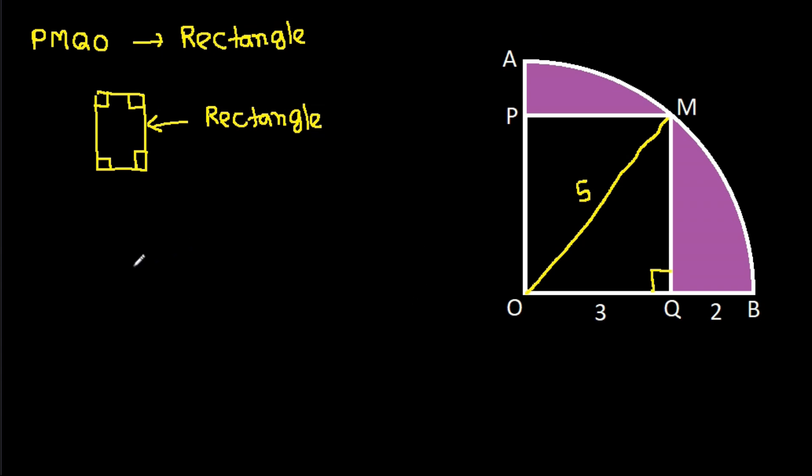Now, in triangle MOQ, this angle is 90 degrees. MO is 5 and OQ is 3.